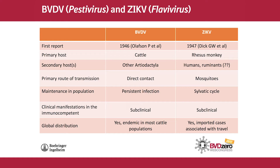The primary route of transmission with BVD virus is through direct contact, mainly via the persistently infected carrier. For Zika virus, the primary route of transmission is through the arboviral vector — mosquitoes — and Aedes aegypti is the predominant mosquito associated with Zika transmission. Zika virus undergoes a sylvatic cycle, which is the endemic cycle representing the proportion of time the pathogen circulates between the vector and its reservoir host. The epidemic with Zika virus is because that sylvatic cycle has spilled over into an epidemic cycle, resulting in infections in humans.